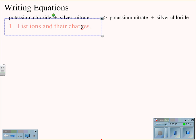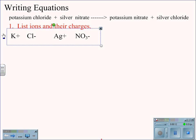We first will list the ions and their charges. Looking on our ion sheet, we will find that we have potassium at plus one, chlorine at minus one, silver at plus one, and nitrate at minus one.